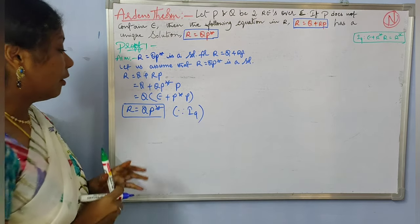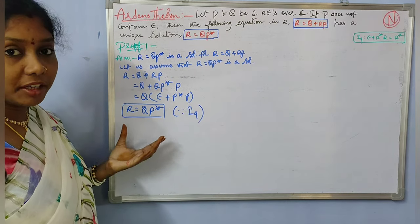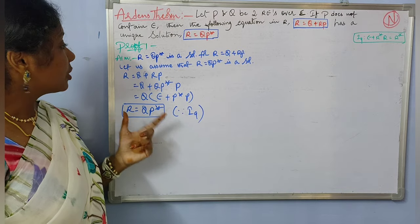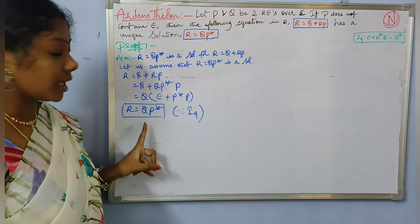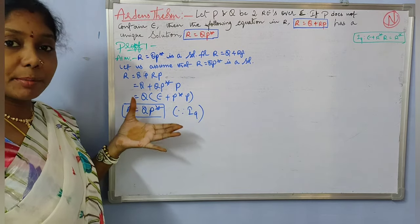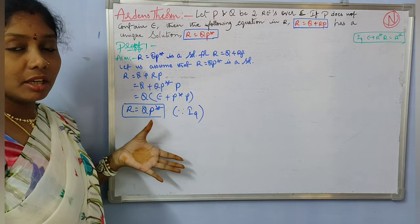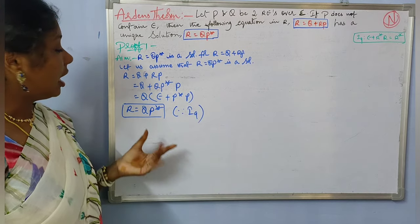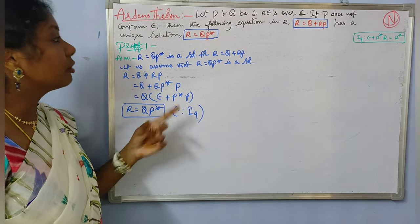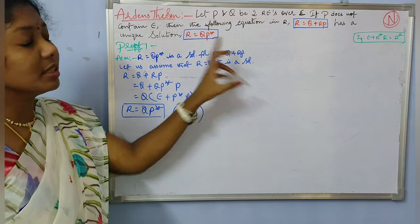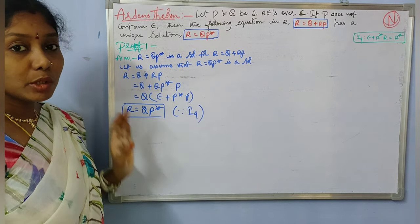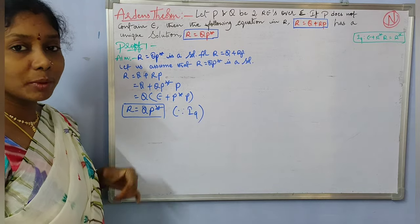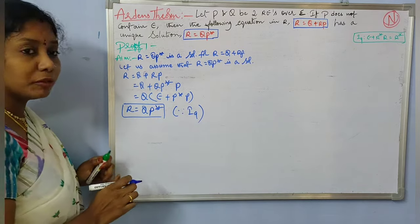Finally, what we get is R equal to QP star, which is the solution. Our initial assumption was correct. With this, we have proved that R equal to QP star is the solution for R equal to Q plus RP. This is proof 1.